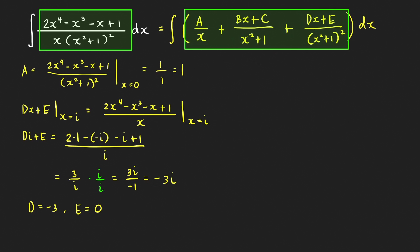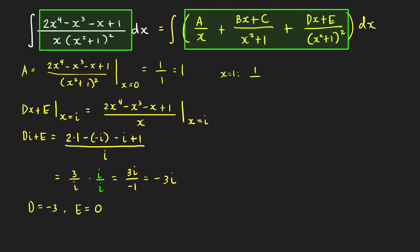Now we're left with determining the values of B and C. We'll find them by plugging in specific values of x. We can use any value other than x equals 0. Choosing x equals 1: plugging into the rational function gives 2 minus 1 minus 1 plus 1 over 1 times 1 plus 1 squared, which equals 1 over 4, so 1 fourth.